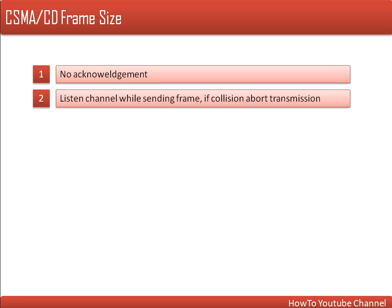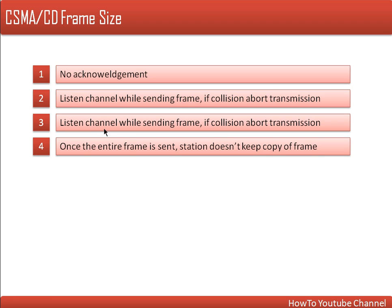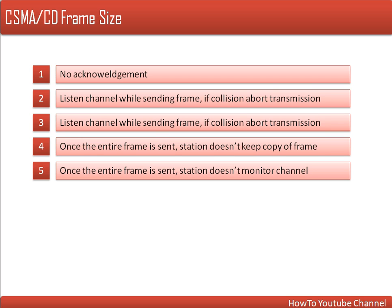As soon as a node finds out there is a collision in the network, it will abort the transmission. If the entire frame is sent and the node does not detect any collision, that node does not keep any copy of that frame. Once the entire frame is sent, there is no stored copy, and once the node is finished with its transmission, it will not monitor the channel.